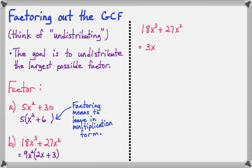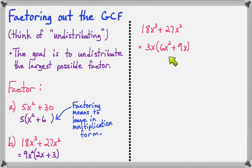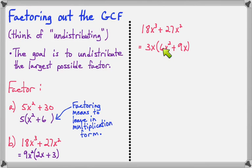If I try to undistribute 3x: 3 times 6 is 18, and x times x squared gives x to the third. And 3 times 9 makes 27, and x times x makes x squared. Now look inside the parentheses — I have 6 and 9. That's a problem because 6 and 9 can both be divided by 3, so I did not get the largest possible number outside the parentheses. And look at the x's: I have x squared here and x to the first here — they still share a common factor of x, meaning the x power I pulled out was not large enough. When you get finished, there should not be anything that the terms inside have in common.